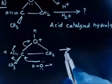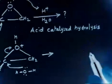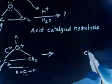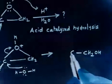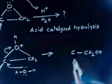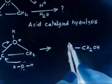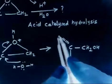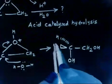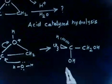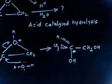So I can write the structure of the product. This side will have CH₂OH — this carbon is not chiral. Now looking at the chiral carbon: OH will come in at the bottom, hydrogen will go up, and CH₃ will go here. Let us find the configuration of this carbon — it is still a chiral carbon.